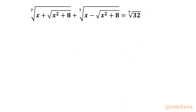Welcome back to InfiGAN friends. Today in this video we are going to take up one very interesting and challenging radical equation problem. It is the 7th root of (x plus square root of (x squared plus 8)) plus the 7th root of (x minus square root of (x squared plus 8)) equal to the 7th root of 32. We have to find out all real solutions.